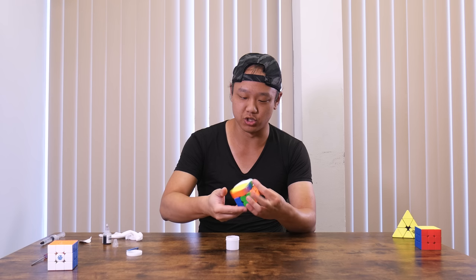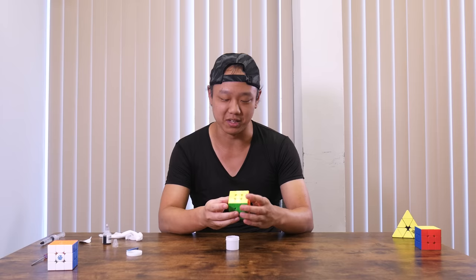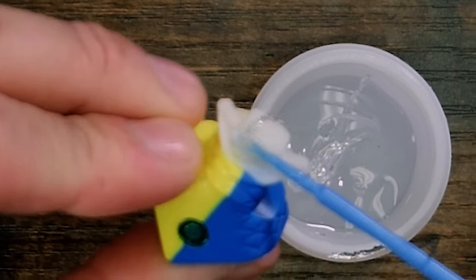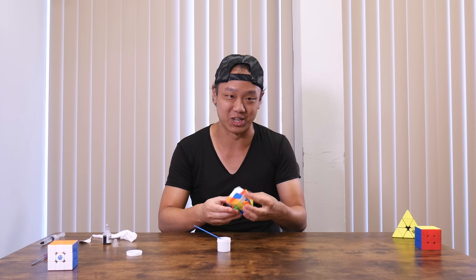So this is the Moyu Tianma, this is the Maglev version. It's extremely quick, so we're going to lube it with weight 1 million. Wait, this lube is actually good on this cube. This is a nice cube.